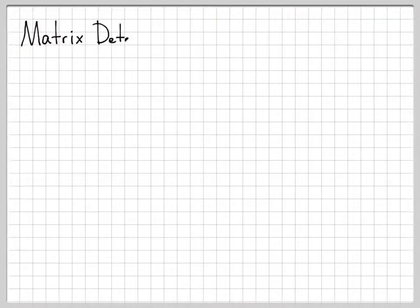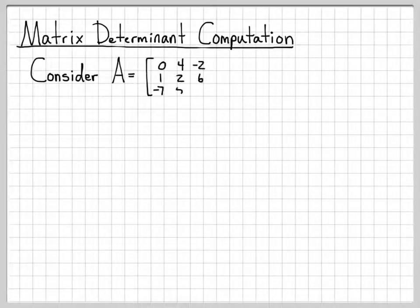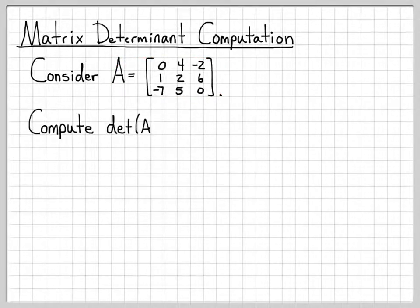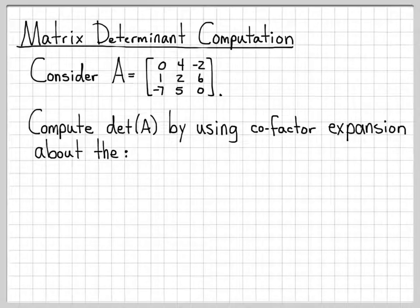In this video, we're going to compute the determinant of a matrix using the core definition of the matrix determinant. The matrix we're going to work with is a 3 by 3 matrix A. We're actually going to do it two different times, computing the determinant of A using what we call cofactor expansion, expanding about two different things.